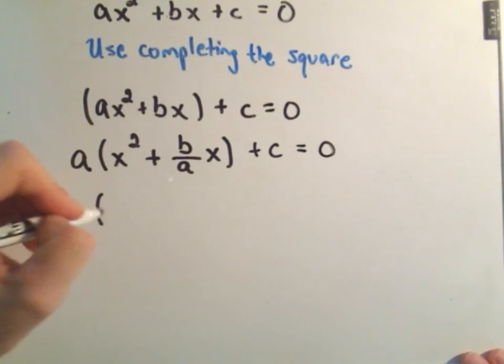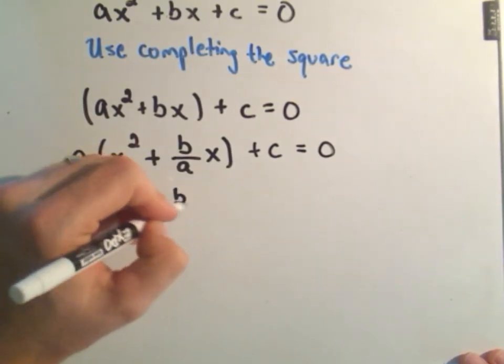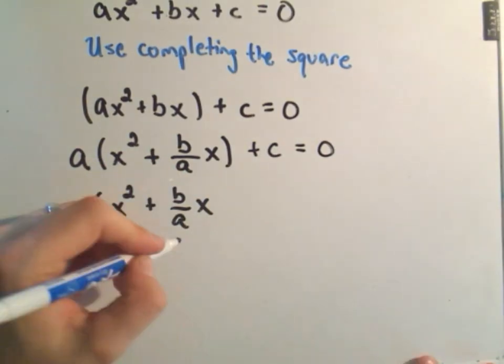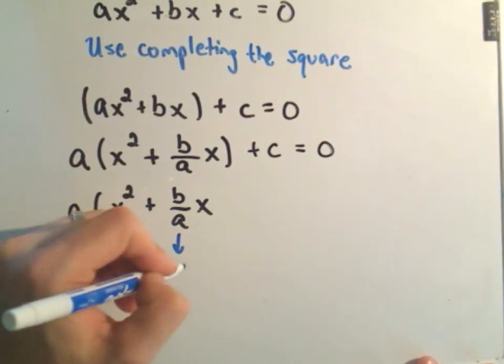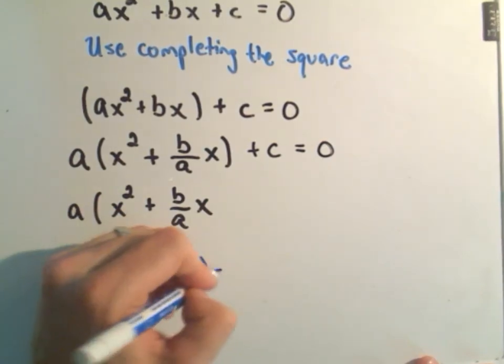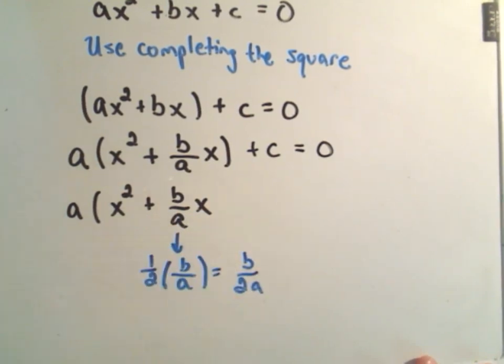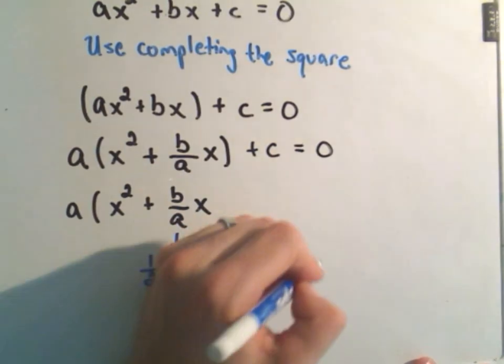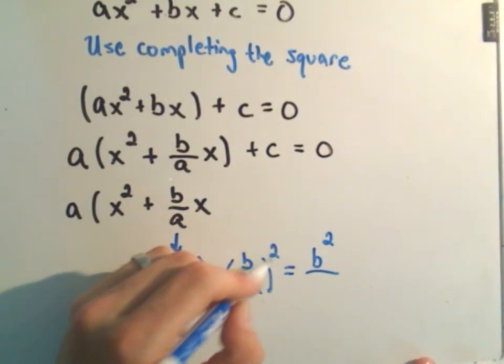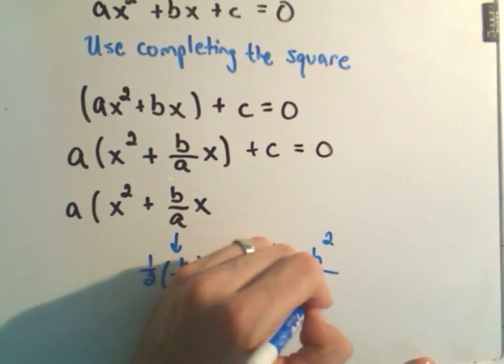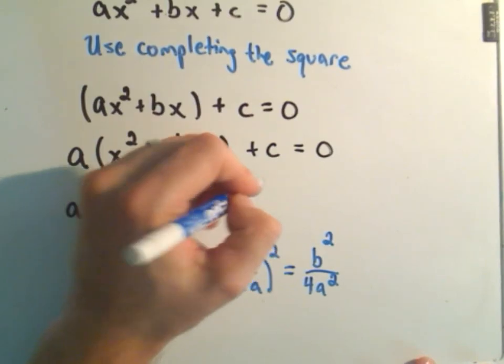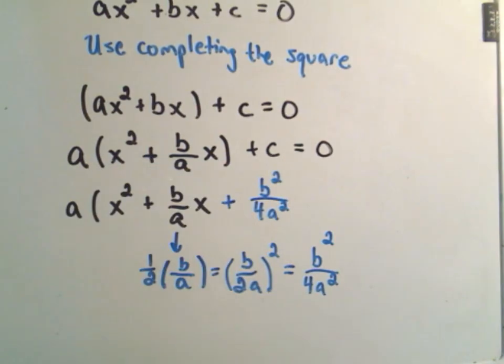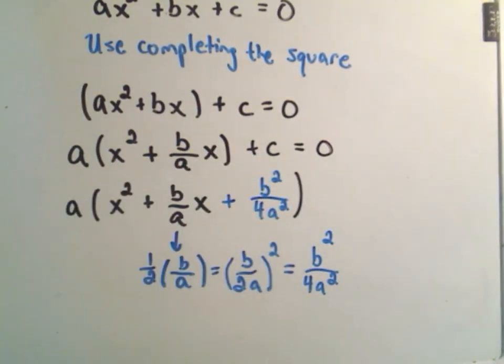Now, completing the square says we take one half of whatever the number in front of x is, so that's one half of b over a, which is just b over 2a. And then we square that. That means we have to square the top and square the bottom. If you square the top, you get b squared. If you square the bottom, you'll get 4a squared. So that's the new thing that we throw in there, is b squared over 4a squared. That's the extra bit when you do completing the square in this case.